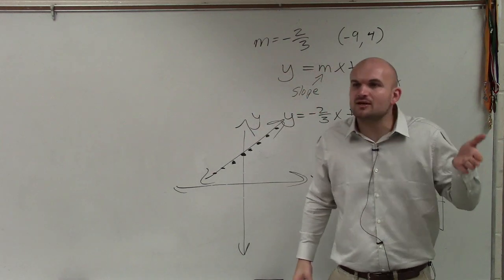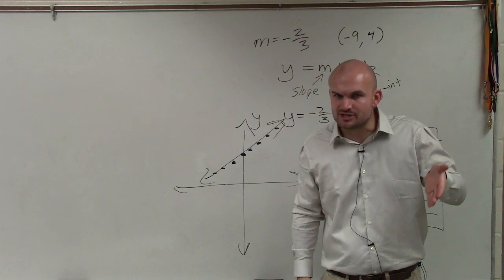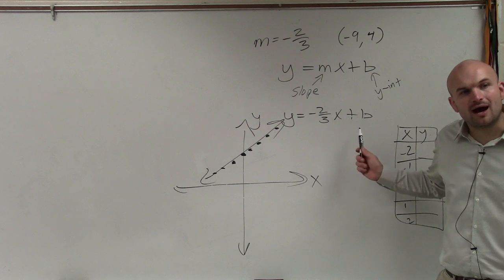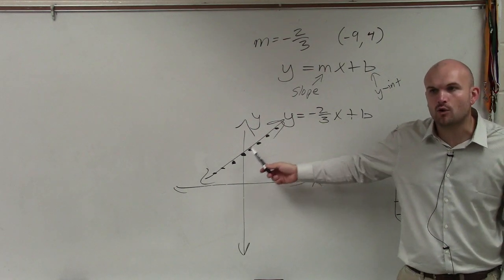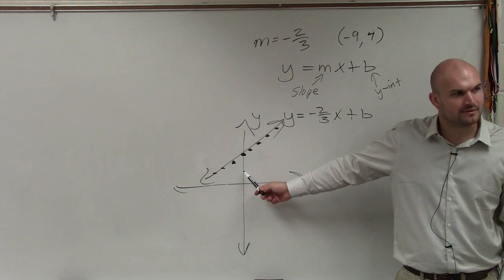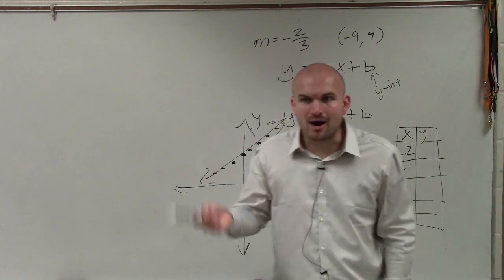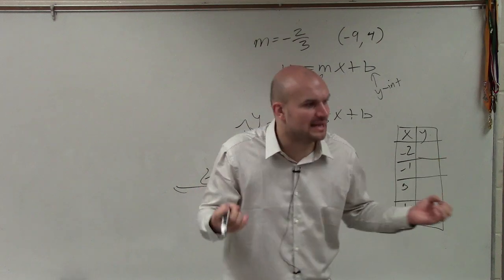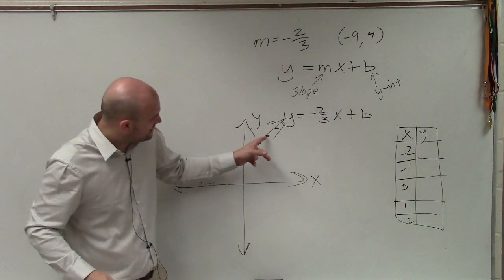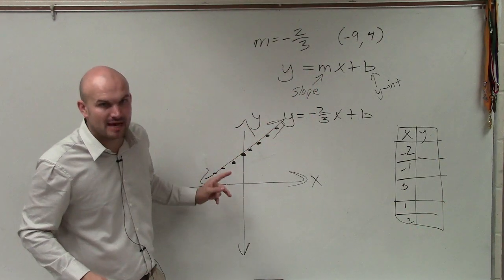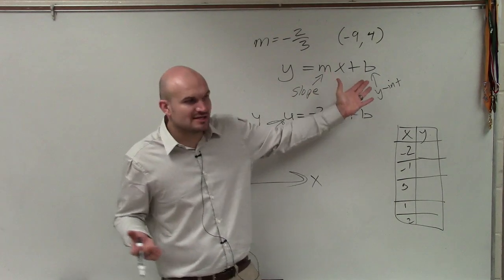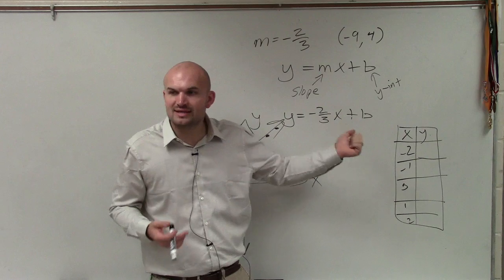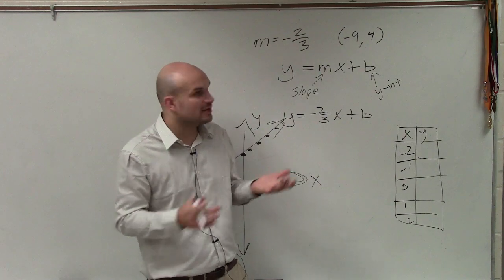So what the x and the y represent in the equation, the x and the y represent all of the different x and y coordinates that make up the line. So the x and the y represent the infinite many points. They represent this point, that point, this point, that point. So we still don't know what the y-intercept is. But do we know a point that lies on the line? Yes.